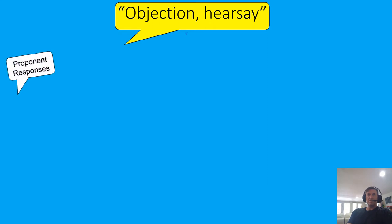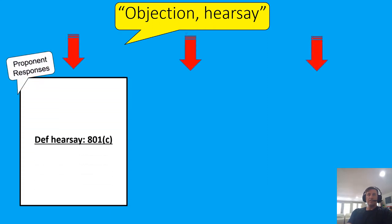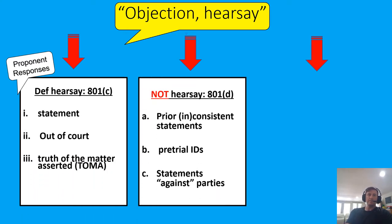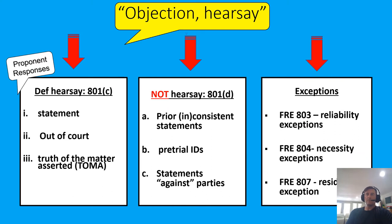Here's one way to look at the fabric of everything that can happen in an evidentiary conversation about hearsay. It starts with objection hearsay — that's where the opponent is coming from. Everything else represents the responses coming from the proponent. There are three different blankets for the proponent's responses. The opponent is always saying the same thing: definitional hearsay under 801. Objection hearsay means this is a statement out of court offered for the truth of the matter asserted.